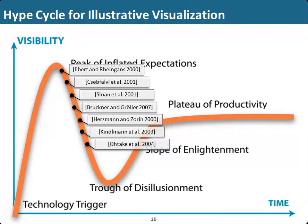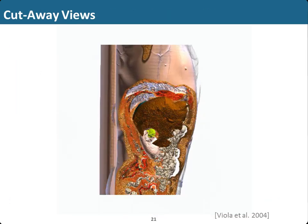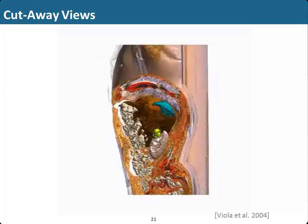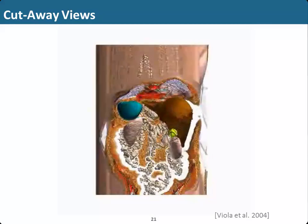This may give a negative impression which I don't want to communicate — all these works did a great job. But this was the period in illustrative visualization where people started to realize certain problems needed to be fixed before the techniques could be used effectively. As they were not used strongly at that period, visibility went down — not necessarily the intensity of work, but the visibility of the technology, which is the y-axis here. And then it's important not only to look at low-level visual abstractions like line drawings and shadings, but at high-level visual abstractions as well.